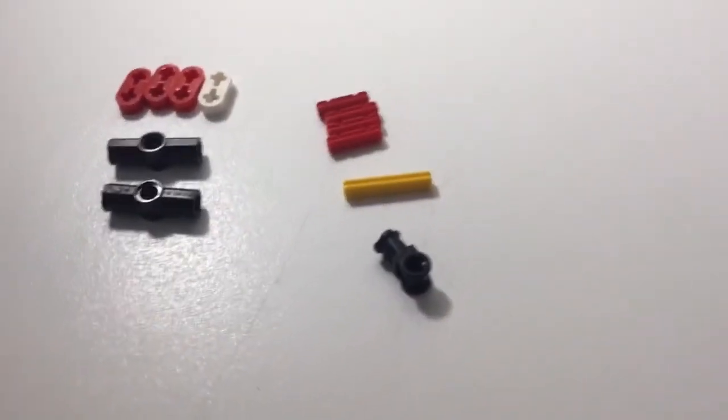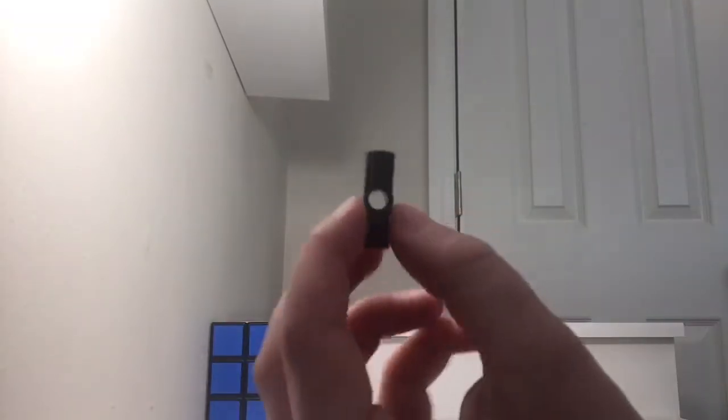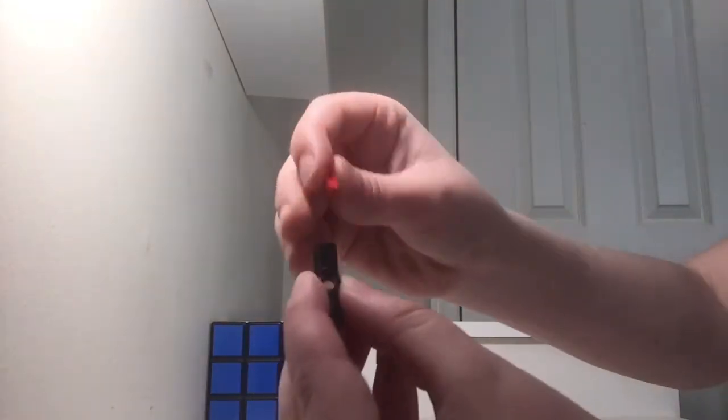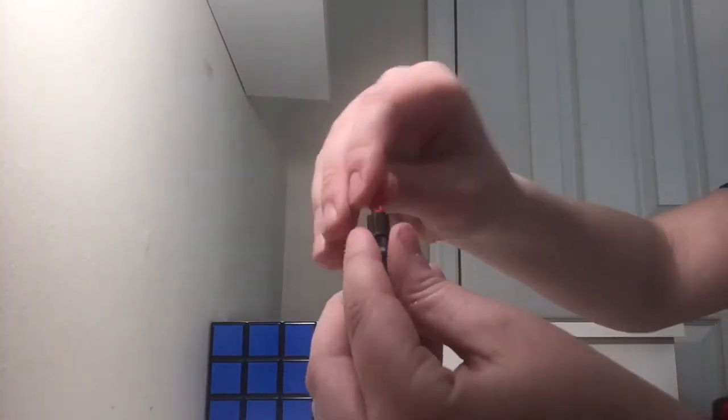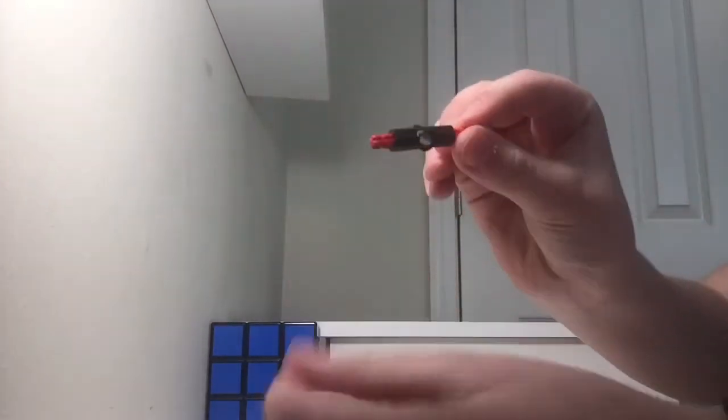What you do is you get one of these, you get this piece, one of the little red ones, you put it in there. Then you get another little red one and put it in this side, and then you have that.